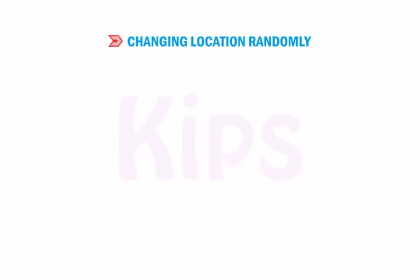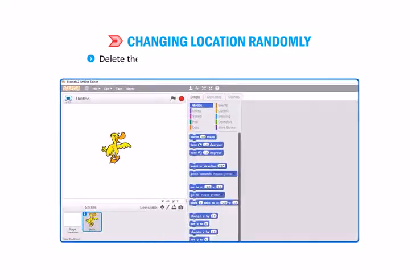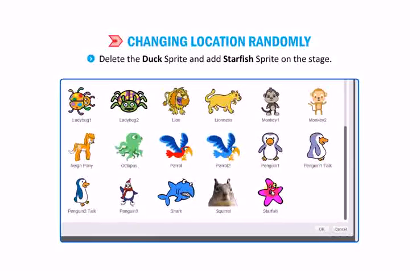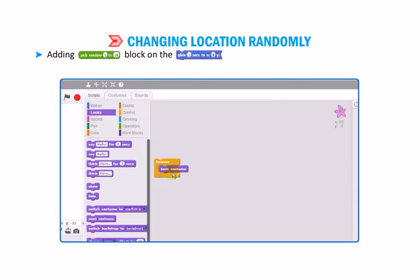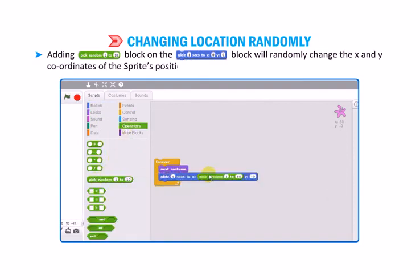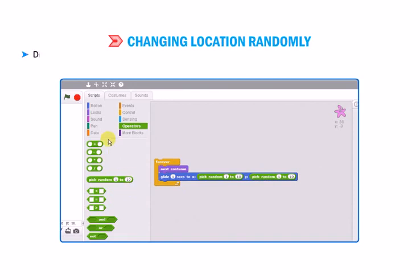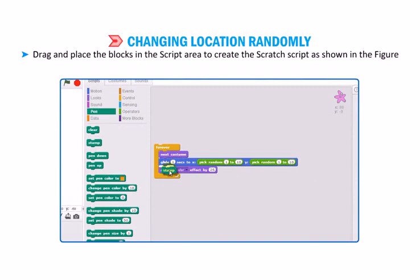Now let us learn how to change location randomly. You can also use the pick random 1 to 10 block to specify any random location of a sprite on the stage. Delete the duck sprite and add the starfish sprite on the stage. Adding the pick random 1 to 10 block on the 'glide 1 seconds to x: 0, y: 0' block will randomly change the x and y coordinates of the sprite's position on the stage. Drag and place the blocks in the script area to create the Scratch script as shown in the figure and execute it to observe the sprite changing its location randomly.